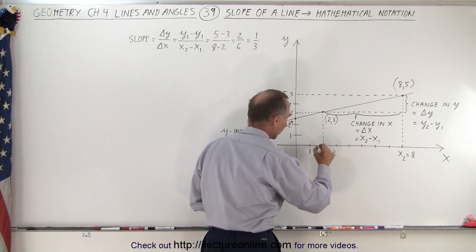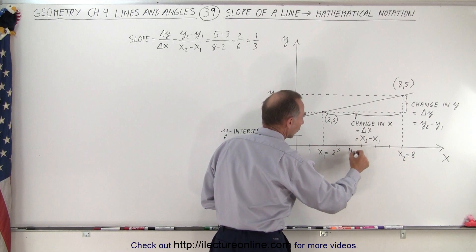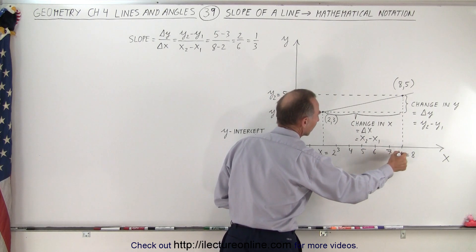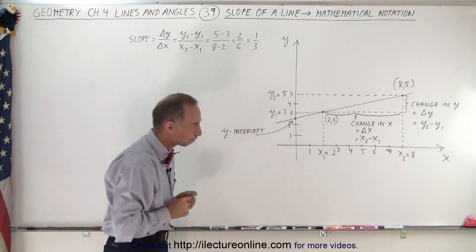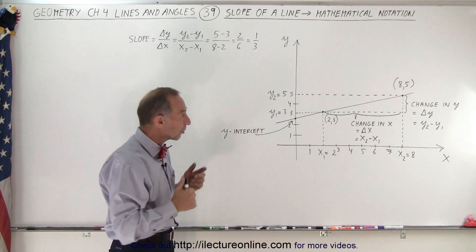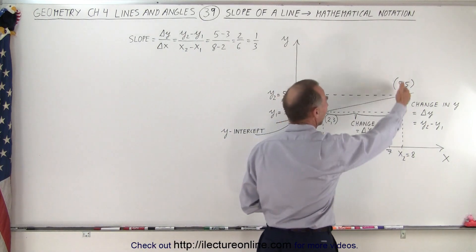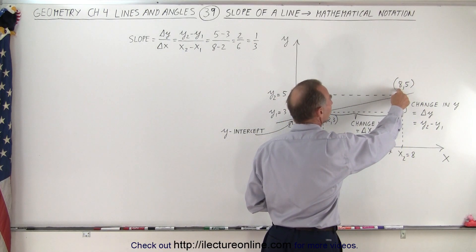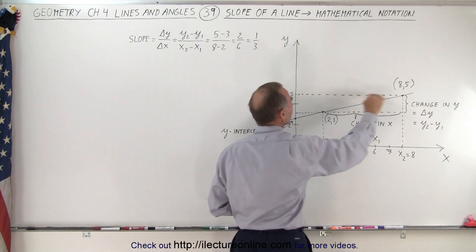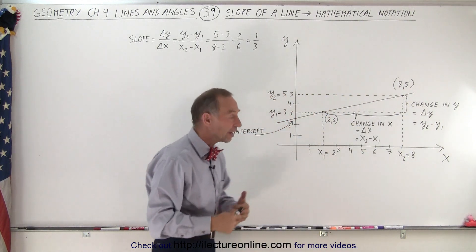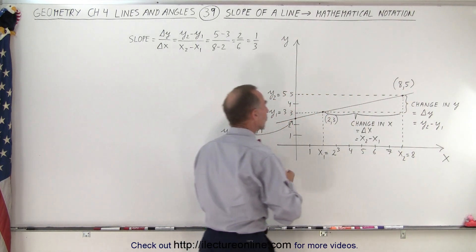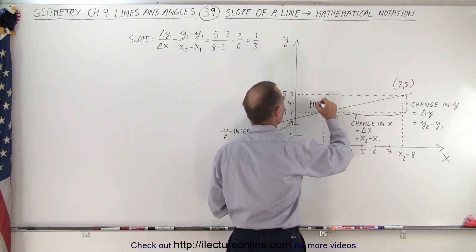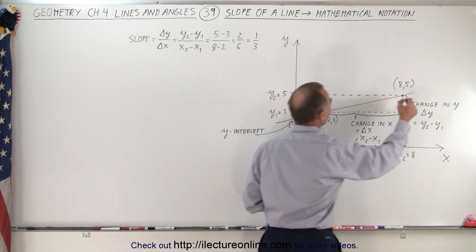And we do the same on the x-axis. This is 1, 2, 3, 4, 5, 6, 7, and 8. So then our second point has the x-coordinate of 8 and the y-coordinate of 5. So that's (8, 5). This is (2, 3). So let's call this P1 and let's call this P2.